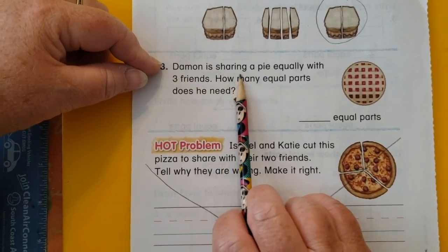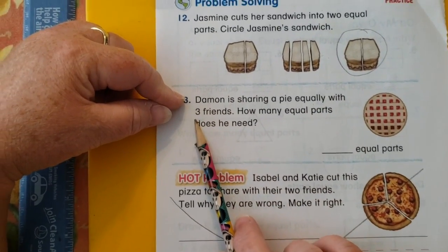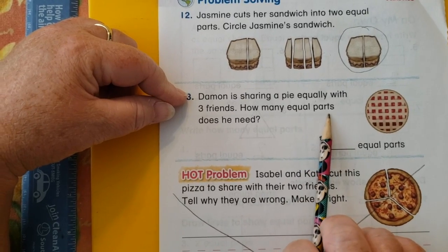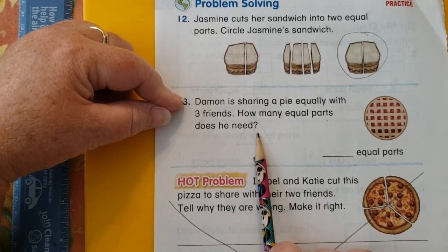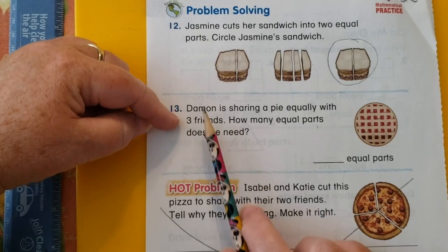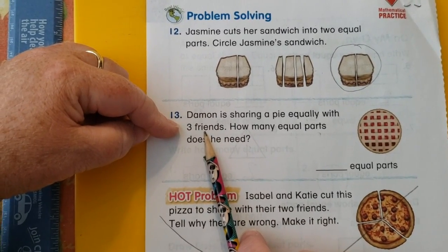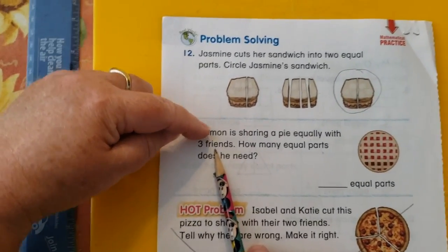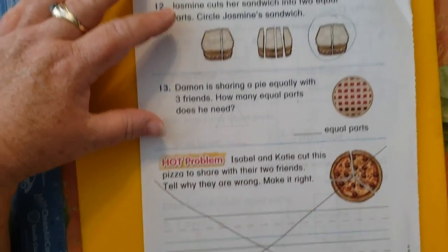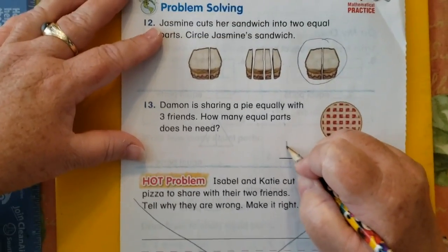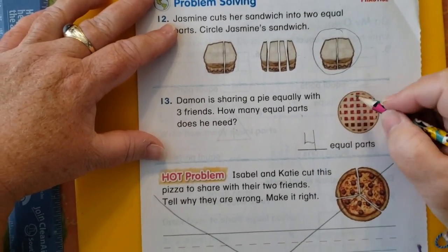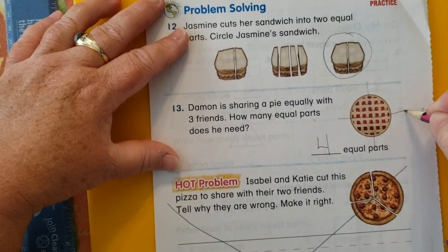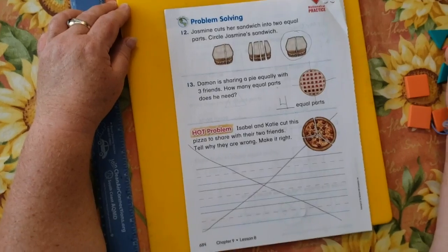Damon is sharing a pie equally with three friends. How many equal parts does he need? Well, if Damon is sharing with three friends, that means how many people all together? Damon plus three more, that makes four. So he needs four equal parts. So he could cut his pie like this. That looks delicious.